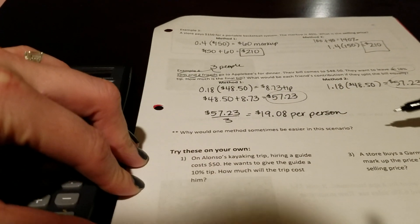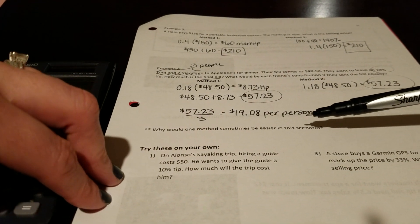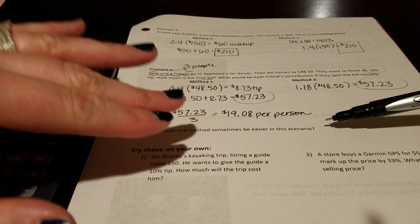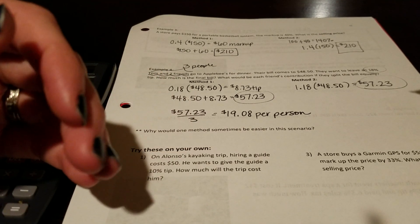So why would one method sometimes be easier in this scenario? One of the things that kind of comes up is if you leave your tip separately on the table after you've already paid your bill.